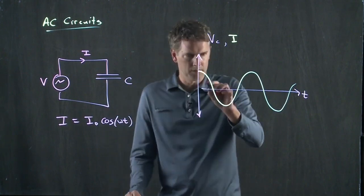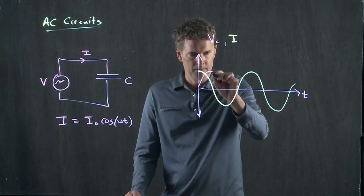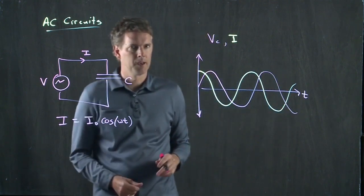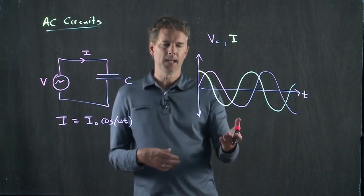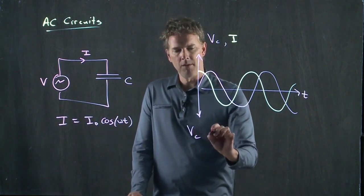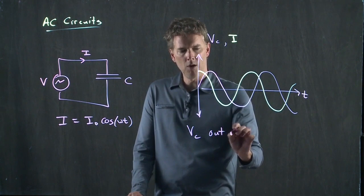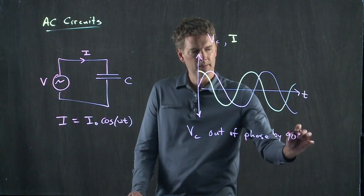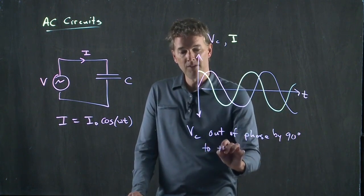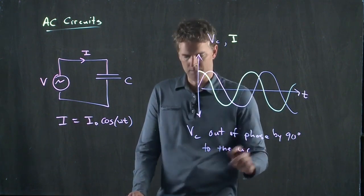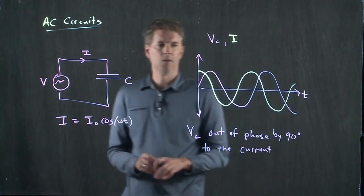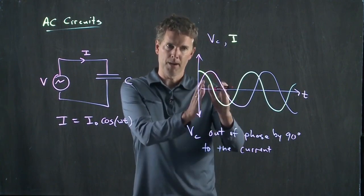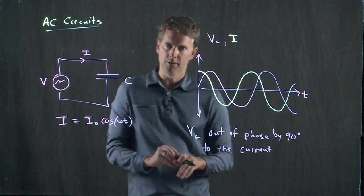But the voltage drop across the capacitor doesn't follow the current. It, in fact, goes like this. It leads by 90 degrees. So the voltage drop across the capacitor is also out of phase by 90 degrees to the current, but it's the other way. Remember the inductor was on the left side, the capacitor now is in fact on the right side of the current.